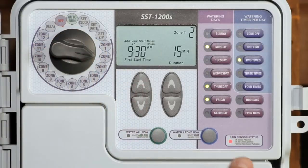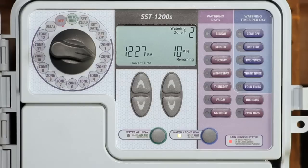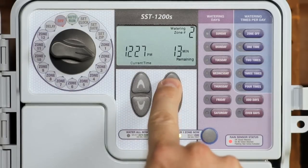To water just one zone at any time, turn the dial to that zone, then press the water one zone now button. The zone will start watering for a default of 10 minutes, and you can use the right up down arrow key to adjust the time.